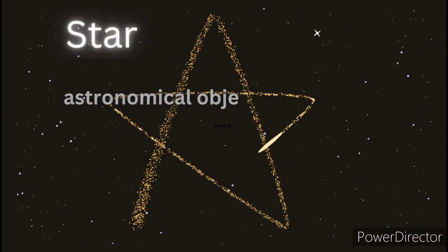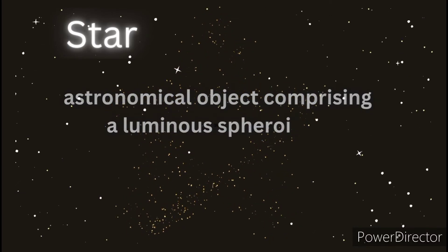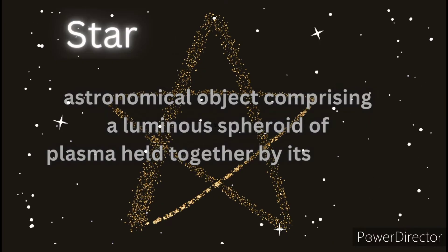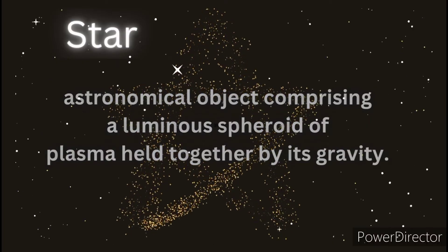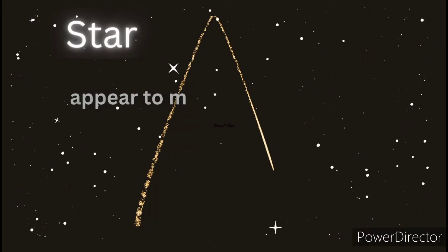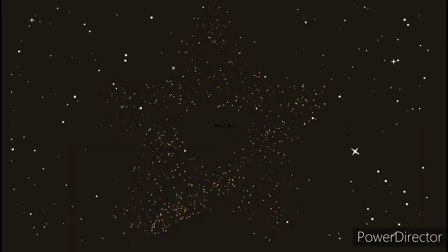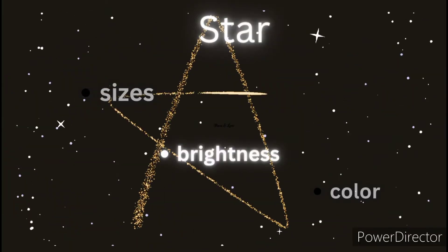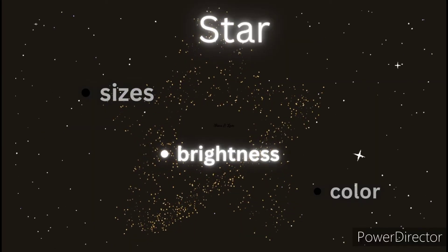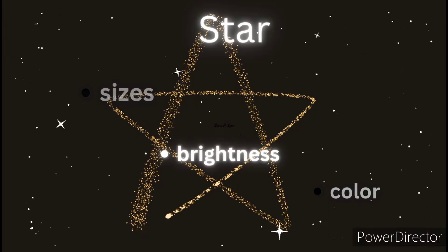So what are stars and how do they form? A star is an astronomical object comprising a luminous spheroid of plasma held together by its gravity. Stars also appear to move in the night sky from east to west. The stars differ in many ways — they are different in sizes, brightness, and color. Let us talk about each one by one.